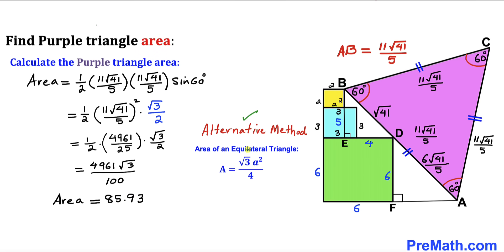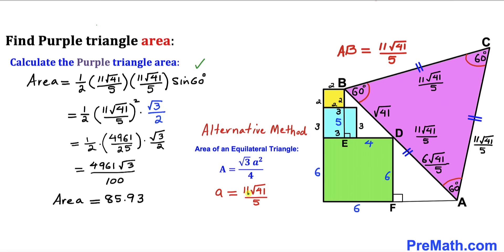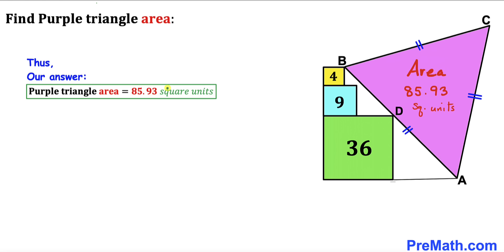As an alternative method, we could use the equilateral triangle area formula: area equals √3 times A squared divided by 4, where A is 11√41/5. This also gives the area of the purple triangle as 85.93 square units. Thanks for watching, and please don't forget to subscribe to my channel for more exciting videos.